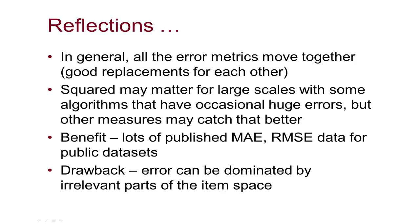Both MAE and RMSE have lots of public data sets with public results on algorithms, making comparisons easier. The drawback is that error as a measure is often dominated by the irrelevant parts of your product space. If you're very good at identifying the top 50 candidates for somebody but just don't know how people feel about the bad items, error will hurt your measure. If all you really care about is finding 100 things for somebody, how accurately you can predict item number 4,000 may just not matter — and you should look at other kinds of metrics, which we'll cover in upcoming lectures.